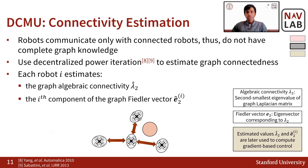The second component of our algorithm is the decentralized power iteration method, which is used to estimate the system connectivity information. Since robots only communicate with their connected neighbors, each robot does not have complete information about the weighted graph. Thus, similar to previous works, we use the power iteration method for each robot to estimate the connectivity information. Each robot estimates the algebraic connectivity of the weighted graph along with a component of the Fiedler vector. These estimated values are later used in the gradient-based control.